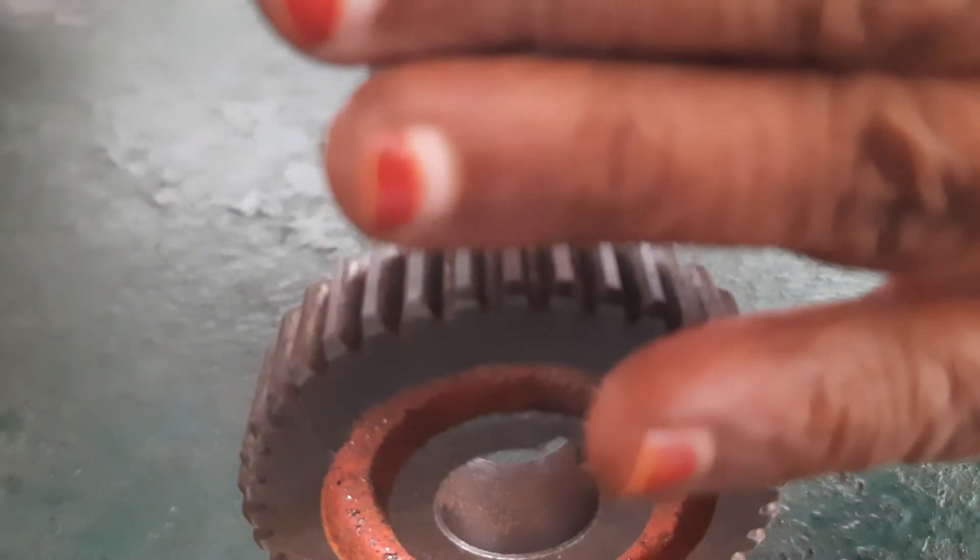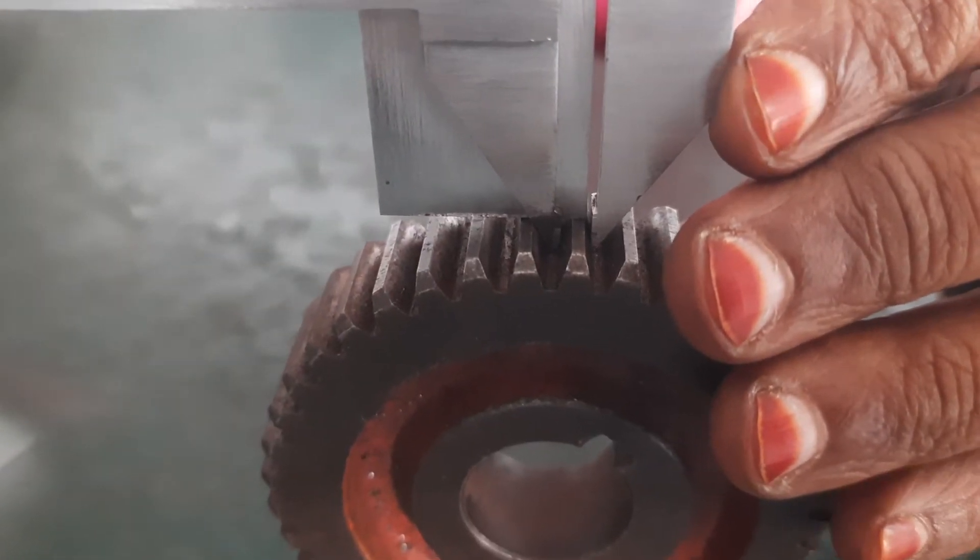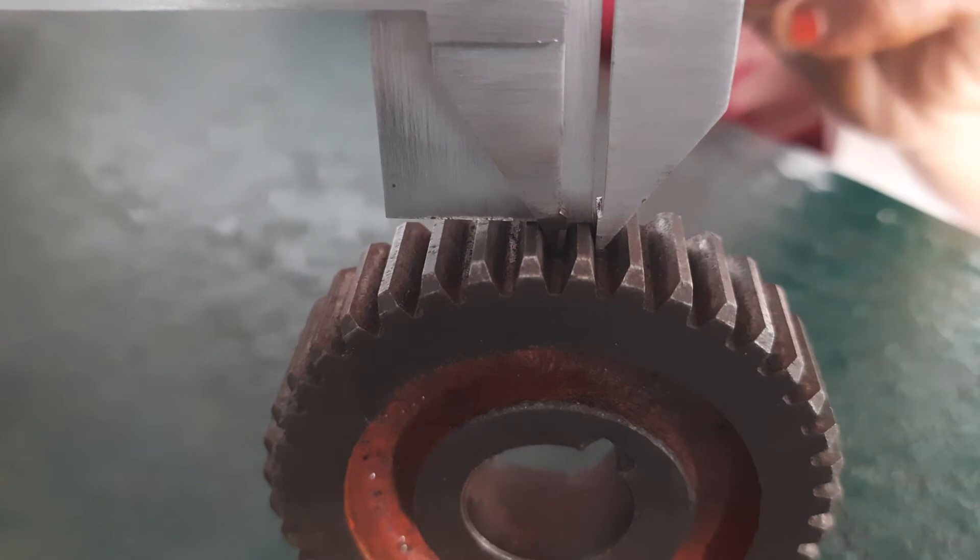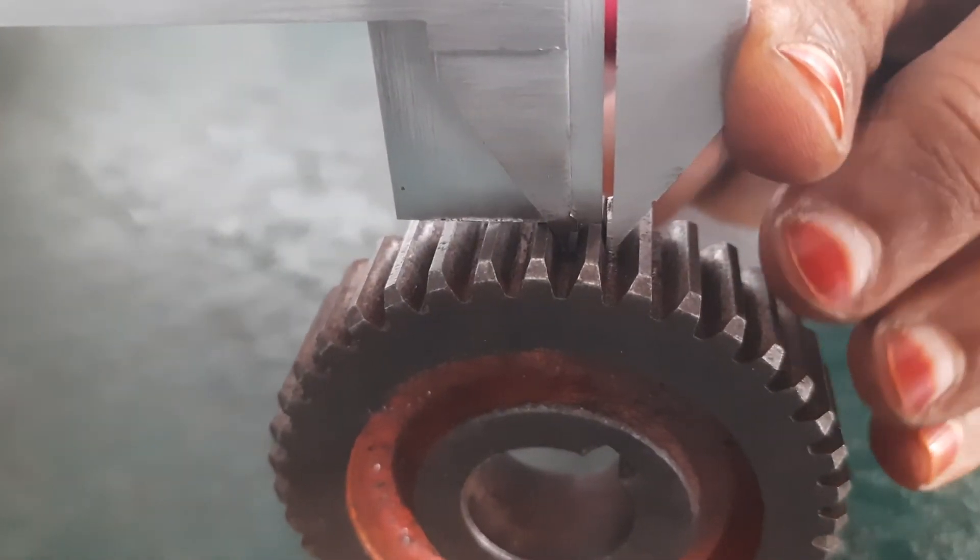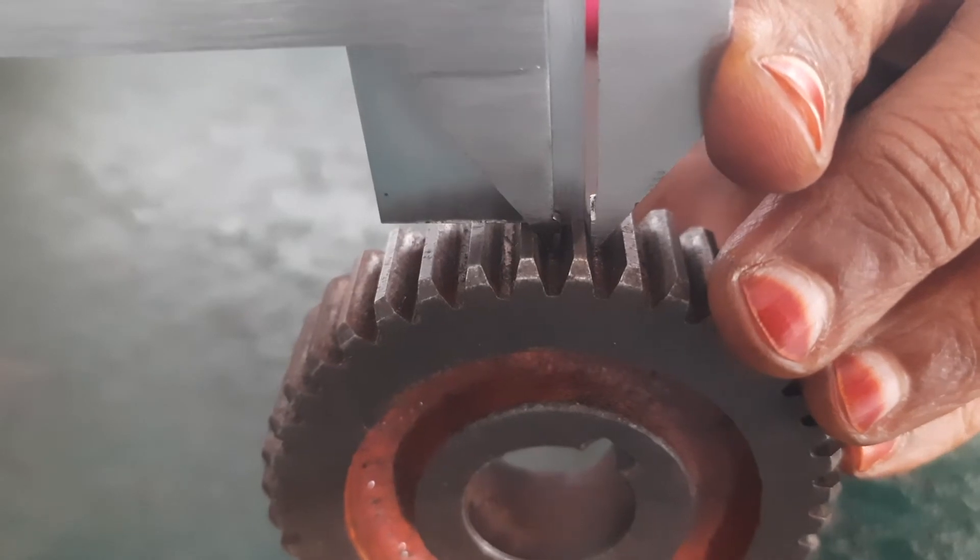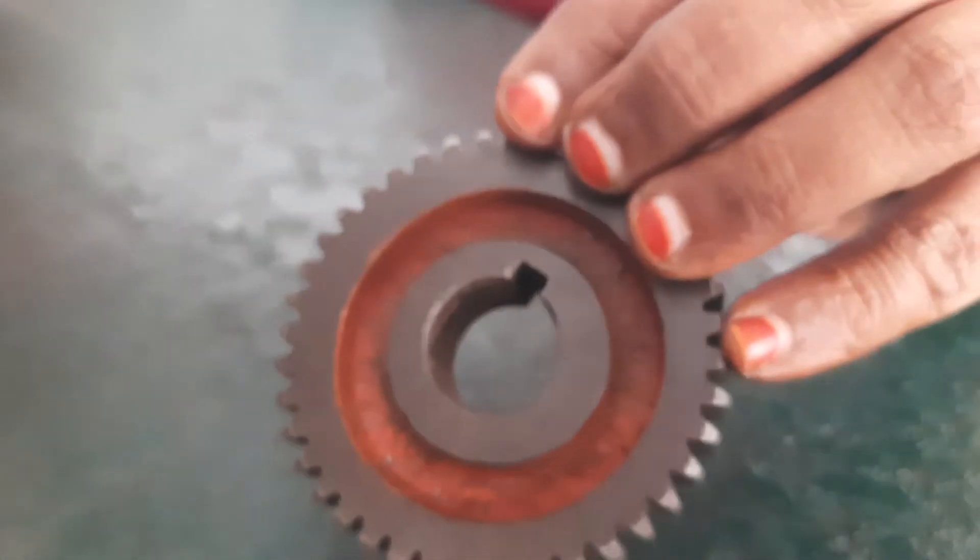Here we are measuring the tip thickness by fixing three holdings: a normal vernier holding and also blade holding. It shows 2.15mm now. We are seeing 2.15mm tooth thickness.